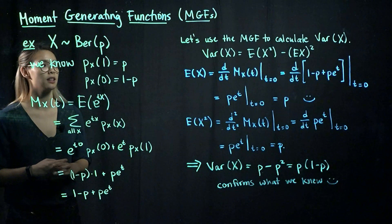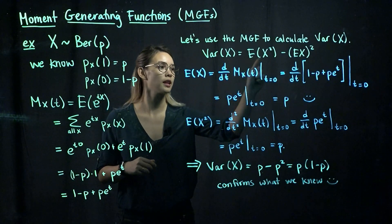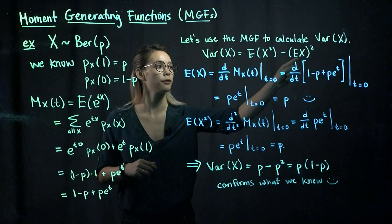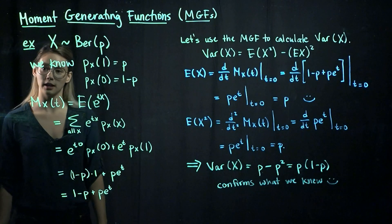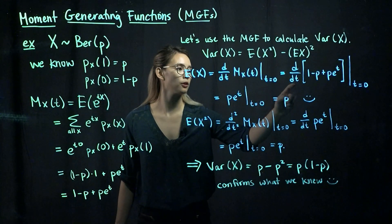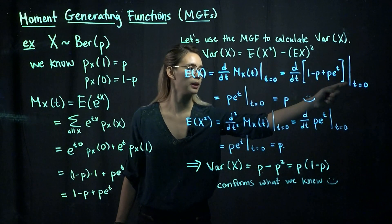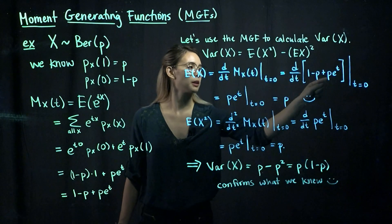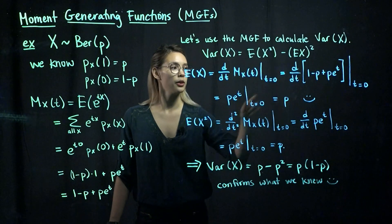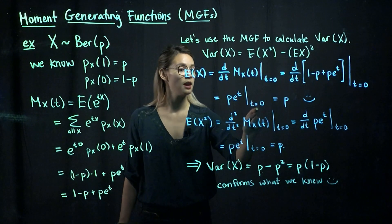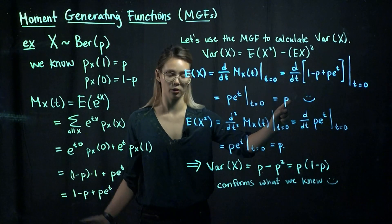Let's practice by calculating the variance of x, where x is this Bernoulli random variable. The variance of x equals the second moment minus the square of the first moment. For the first moment, we take one derivative with respect to t and evaluate at t equals 0. Taking the derivative of 1 minus p plus p e to the t, the constants vanish and we get p e to the t, evaluated at t equals 0, giving us p. This confirms what we already knew: the mean of a Bernoulli is p.